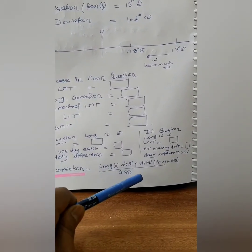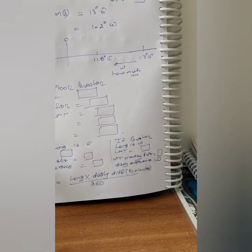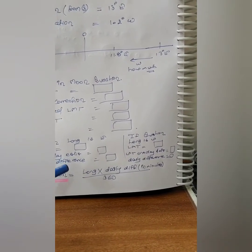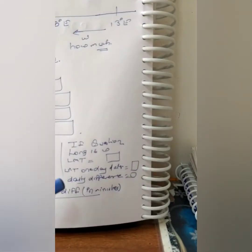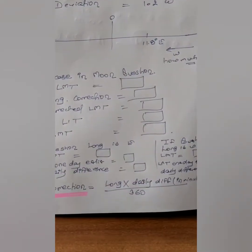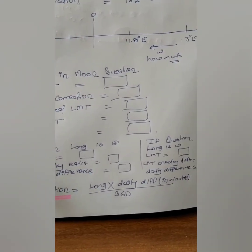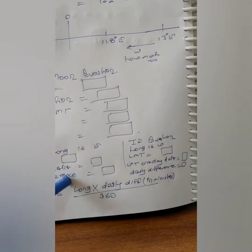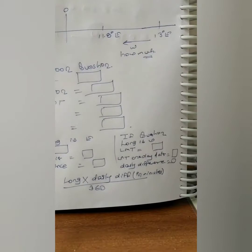The longitude correction formula is: Longitude Correction = Longitude × Daily Difference ÷ 360. For the daily difference: if longitude is East, find the LMT from the almanac for one day earlier; if longitude is West, find the LMT for one day later. The difference between those two moon rise/moon set times is the daily difference — written in minutes.